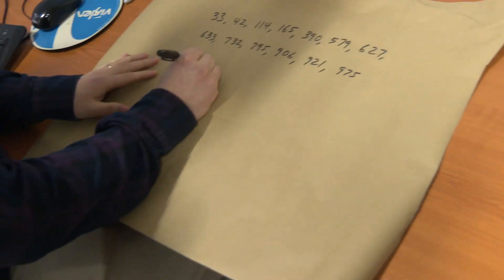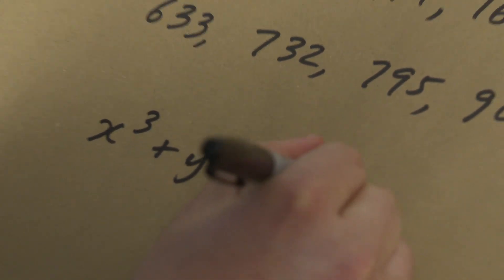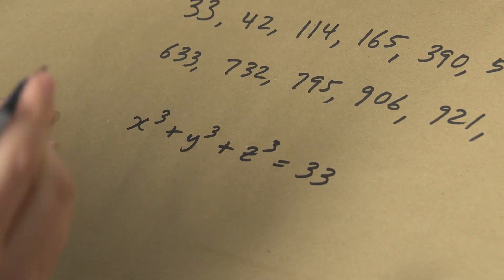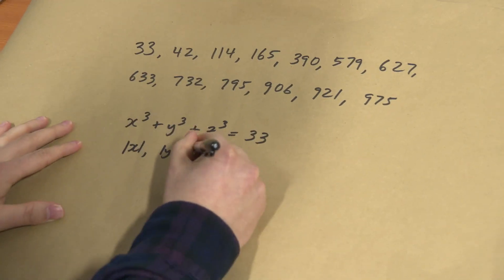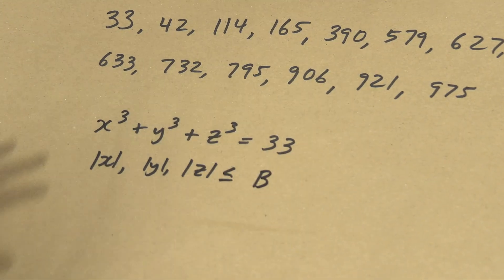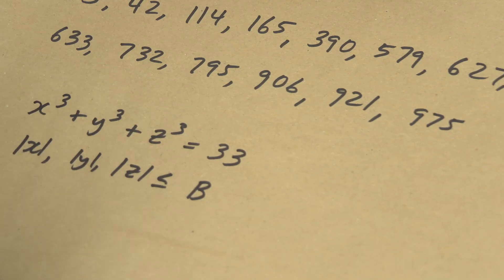We want to solve an equation like x cubed plus y cubed plus z cubed equals, say, 33. And we're looking for solutions where all of the numbers are below some bound. So say absolute value of x, absolute value of y, and absolute value of z are all below some bound, say, b. Imagine b is a million or something. Now on the face of it, this is a three-dimensional problem. We've got three variables to solve for: x, y, and z.